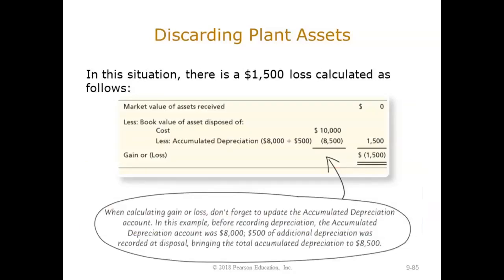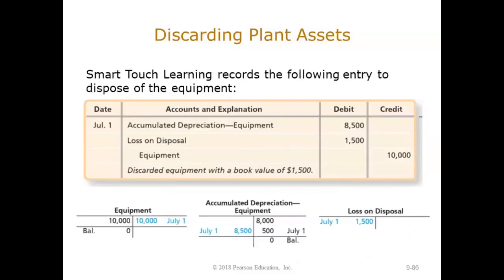In this case, there's going to be a $1,500 loss on this asset because we're not receiving any cash and we're disposing of it. The book value is cost of $10,000 less accumulated depreciation of $8,500 — that's $8,000 plus $500 in depreciation expense for the six-month period. So book value equals $1,500. Market value received is zero, so the gain or loss is a loss of $1,500. The entry is: debit accumulated depreciation $8,500, debit loss on disposal $1,500, and credit equipment $10,000.